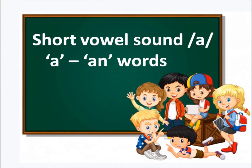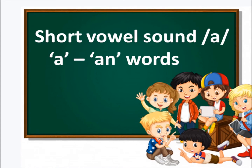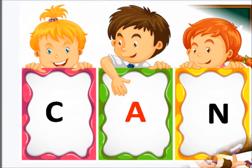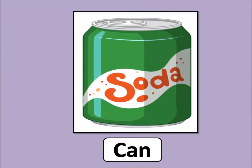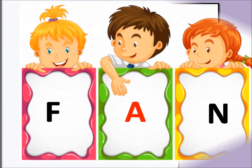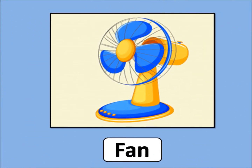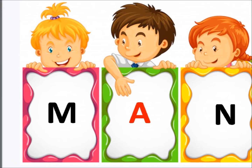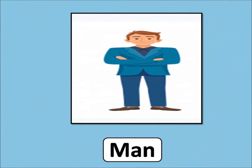Now next one is AN words. It will sound like: A, N — An. C, A, N — Can. F, A, N — Fan. M, A, N — M, An — Man.